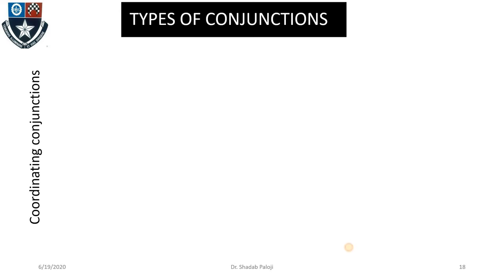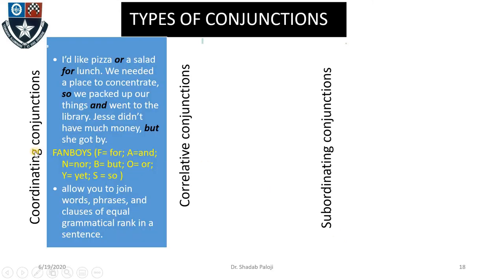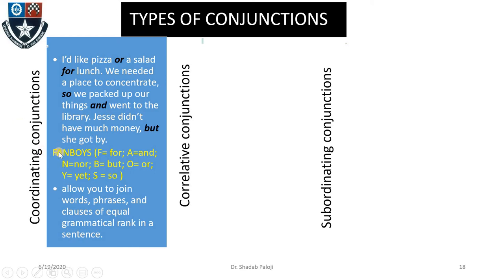There are three basic types of conjunctions in English: coordinating conjunctions, correlative conjunctions, and subordinating conjunctions. For coordinating conjunctions, look at these examples: 'I would like pizza or salad for lunch,' 'We need a place to concentrate so we packed up our things and went to the library,' 'Jesse didn't have much money but she got by.' The highlighted words are 'or,' 'so,' 'and,' and 'but.'